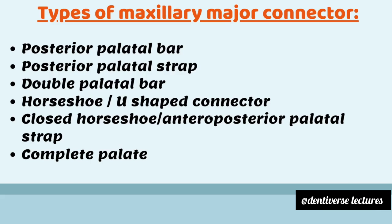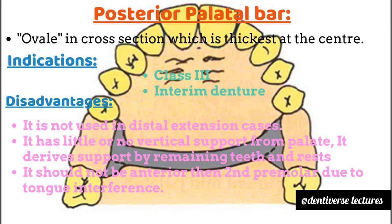Types of maxillary major connectors are: posterior palatal bar, palatal strap, anterior-posterior double palatal bar, horseshoe or U-shaped connector, closed horseshoe or anterior-posterior palatal strap, and complete palate. Let's talk first about the posterior palatal bar — it is oval in cross-section to make it bulky, and it is thickest at the center to make it rigid.